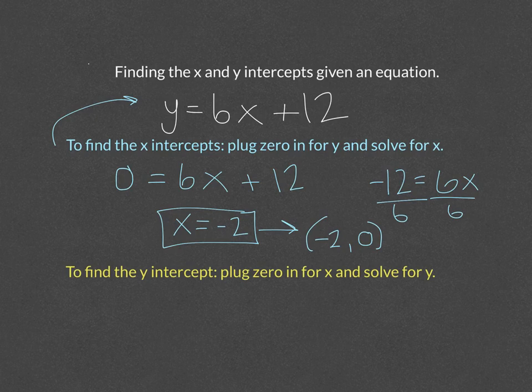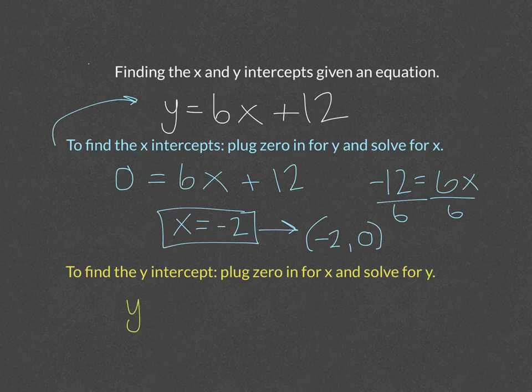To find the y-intercept, you plug zero in for x and solve for y. So what it's really coming down to is you plug zero in for the opposite value to find the specific intercept.